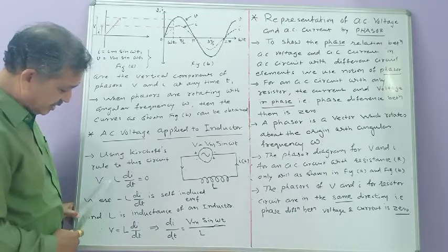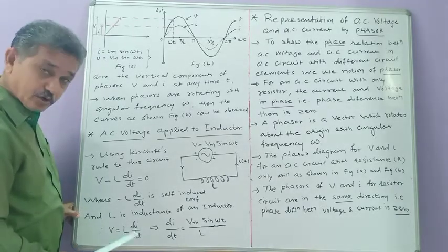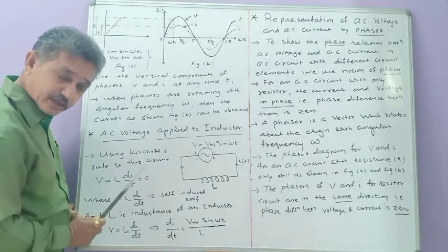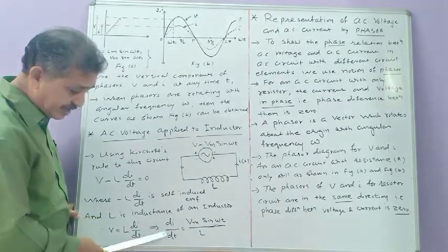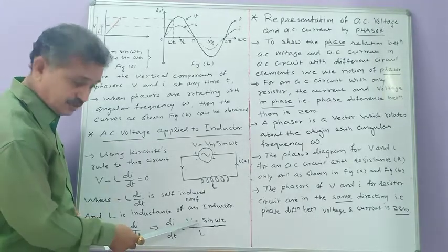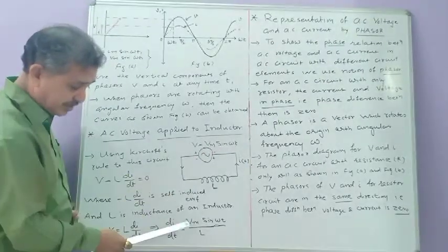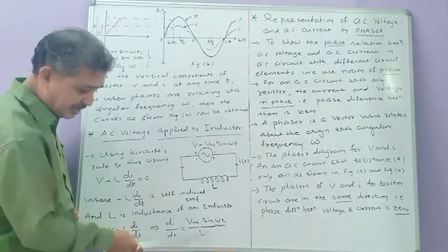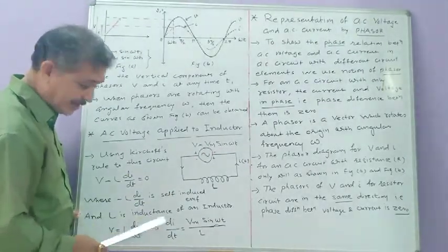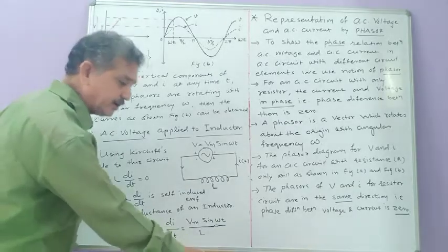We are interested in finding the equation of current, so we write di/dt = (Vm sin ωt) / L. We will now integrate this equation to get the equation of current.